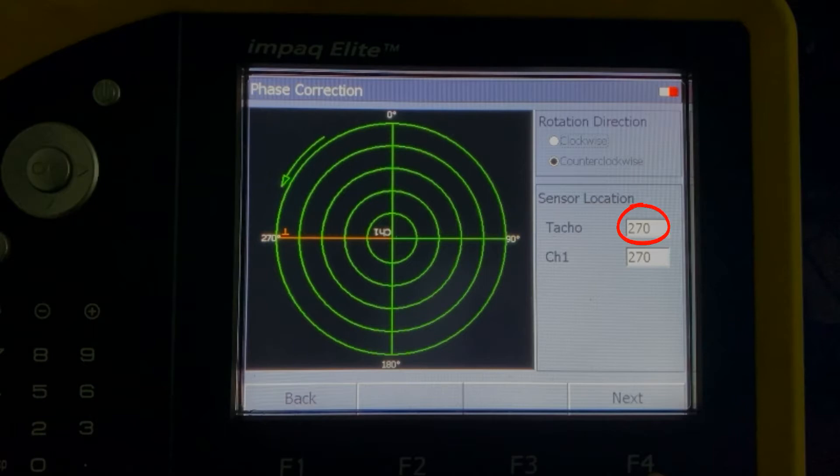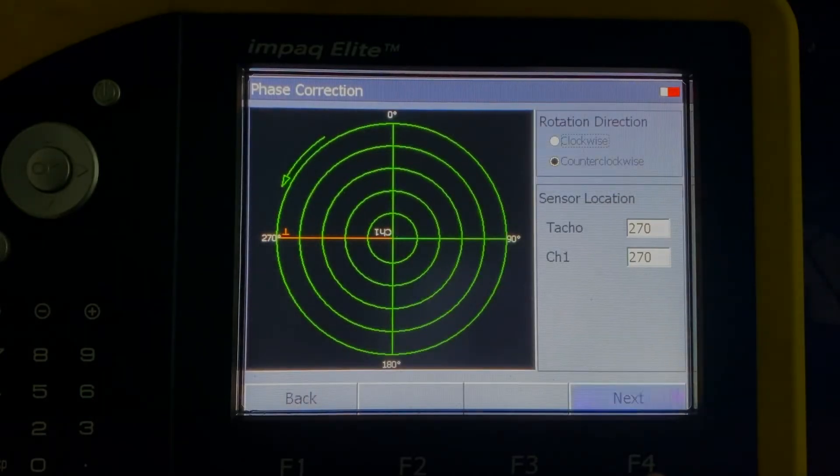We will press next to enter the phase correction menu. For this case, select counterclockwise in the rotating direction and input 270 degrees as the angular positions of the accelerometer and the tachymeter. This sensor location information is required to make the compensation and measure the absolute vibration phase. The software will use this to locate the heavy spot position.